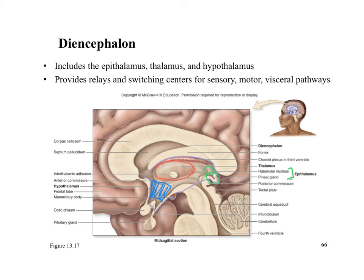The epithalamus includes the pineal gland and the habenular nuclei. The important part of the epithalamus to know is the pineal gland. The tectal plates are analogous to the corpora quadrigemina that you saw in the sheep dissection in lab. You can see them between the cerebrum and the cerebellum.